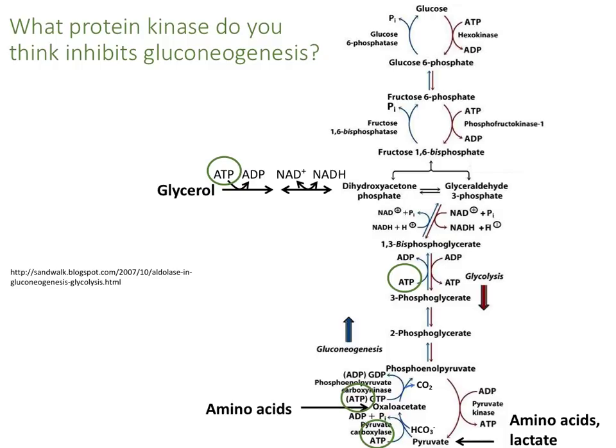Given that gluconeogenesis is an ATP-using anabolic pathway, what protein kinase phosphorylates and inhibits the gluconeogenesis-specific enzymes? AMP-activated protein kinase, or AMPK. AMPK phosphorylates PEPCK, fructose-1,6-bisphosphatase, and glucose-6-phosphatase, inhibiting them and preventing gluconeogenesis if the liver senses that it's running out of ATP.